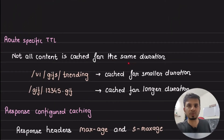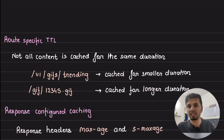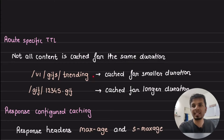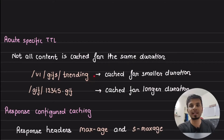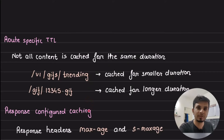The next feature Giphy uses is route-specific TTL. When using CDN as a cache, you specify how long to cache a response. But should that duration be the same for every single resource? No — it has to be specific to the resource. Almost every CDN provider lets you specify cache duration per URL pattern. For example, an API response like /v1/gif/trending might have a shorter duration, while serving the actual GIF like /gif/12345.gif would have a longer duration.